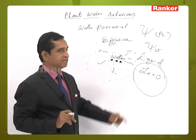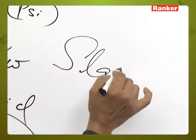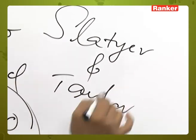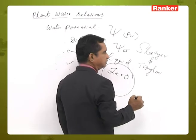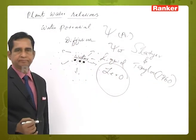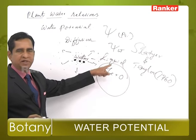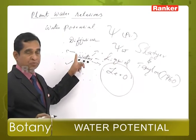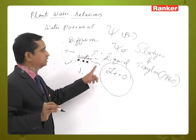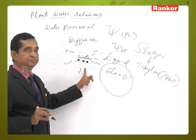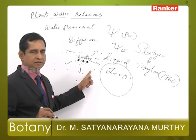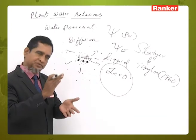This concept was given by Slatier and Taylor in 1960. When the water potential is 0 — that is, the water potential of pure water when it is not bound to any other particle — that is 0. If any substance is added which dissolves in water, the water potential gets reduced from 0 to a minus level.